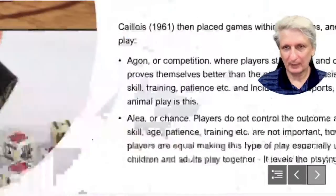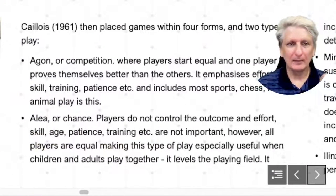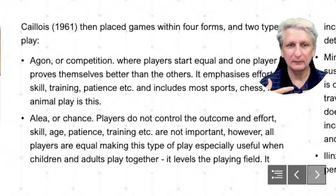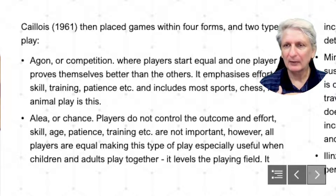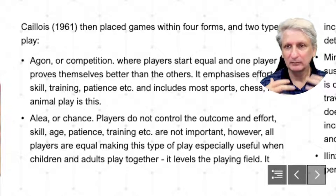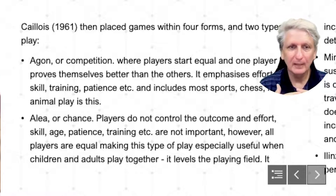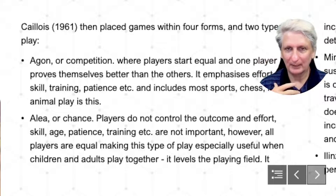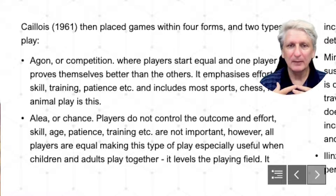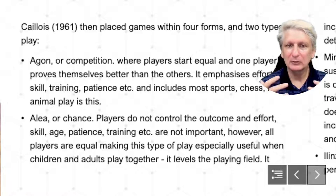There are general forms of play. Agon is competitive play, and we see that mostly in sporting events, but it can also include things like chess and other competitive aspects. Most animal play is very much based around this because it's survival-based learning. We also have alea, or chance-based play, where the outcome isn't necessarily determined by our skill or effort or training, but there's a degree of luck involved. A lot of gambling-based play is associated with this.